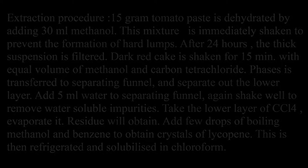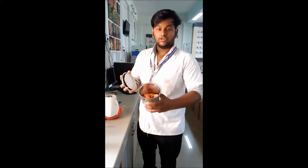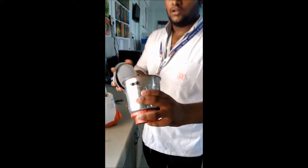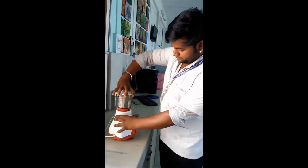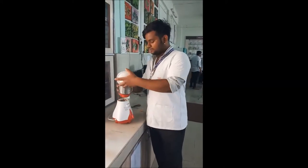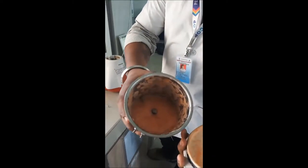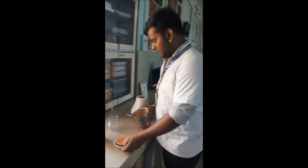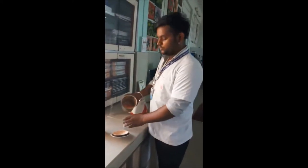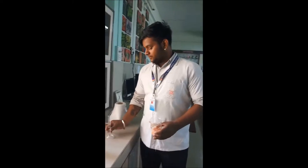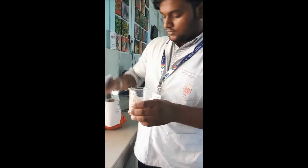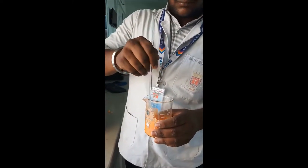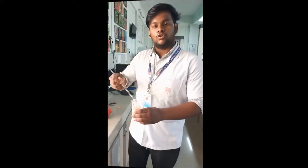First we have to cut the tomatoes and then mix well to form a paste. Now the mixing is over. Weigh the paste — 15 grams — and add this paste into methanol for dehydration. We weigh 15 grams of tomato paste and 30 ml of methanol for dehydration and gradually add the methanol into the paste. Stir it well with the help of a stirrer. Now place it in the fridge for 24 hours.